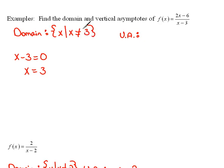That means that 3 is our potential asymptote. We have to, though, look at this function in lowest terms before we can decide that. So looking at the numerator here, we can factor a 2 out of the top. That would be 2 times x minus 3. For the denominator, we can't factor it any, so that's just x minus 3.